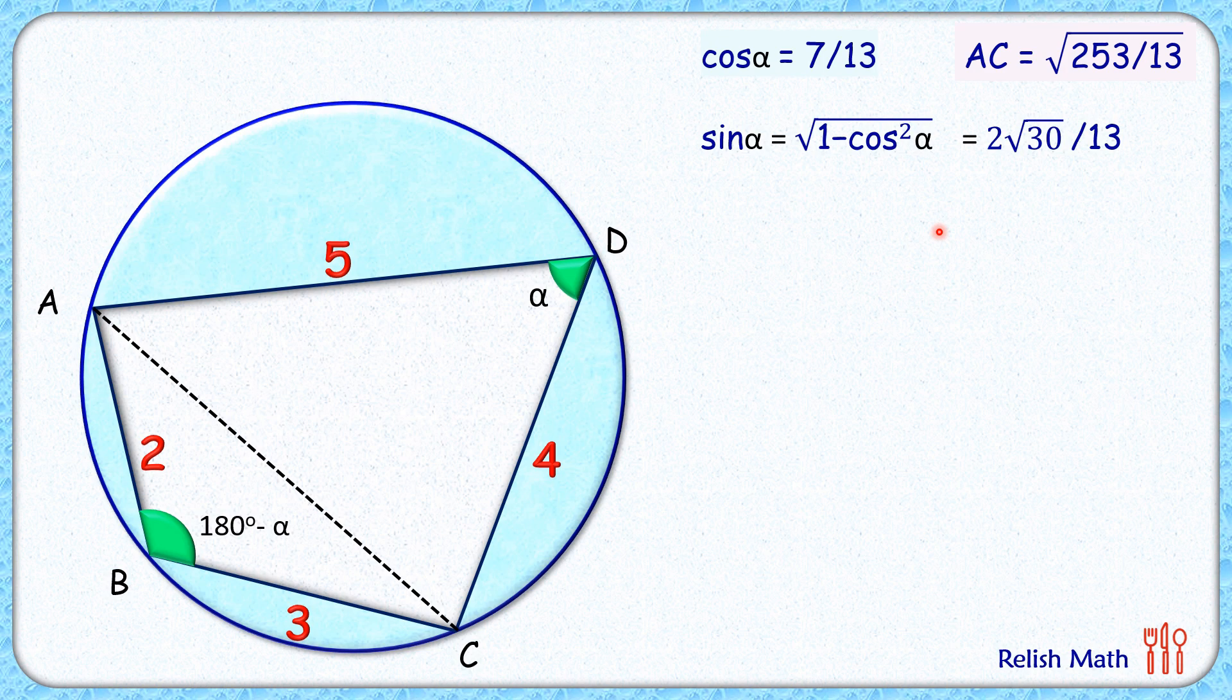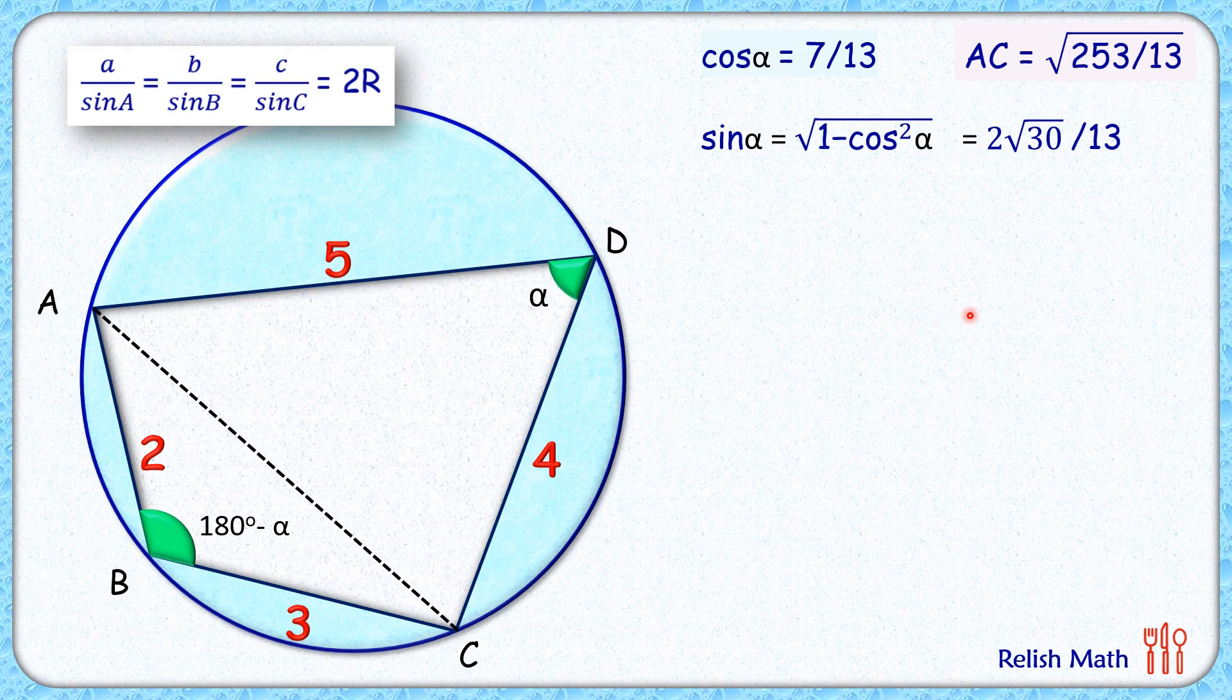Now further we'll use the sin rule. Sin rule in a triangle states that A upon sin A is B upon sin B is C upon sin C, which equals 2 times the circumradius, the radius which is passing through the vertex of the triangle.